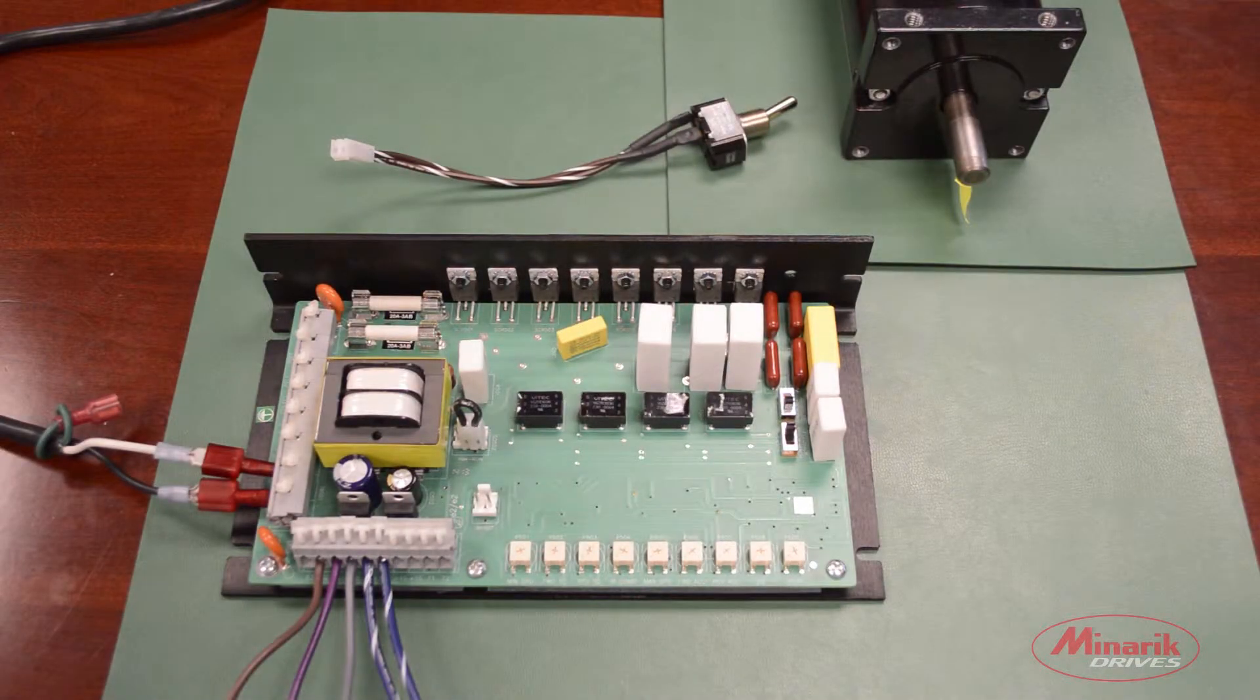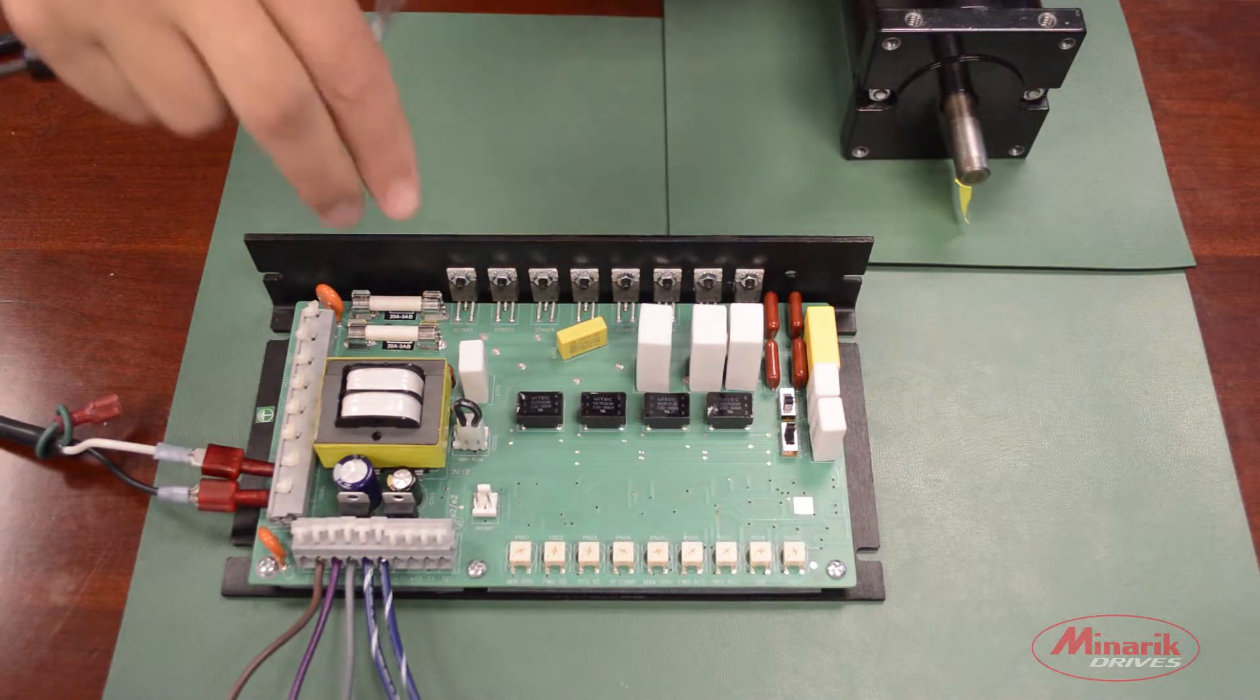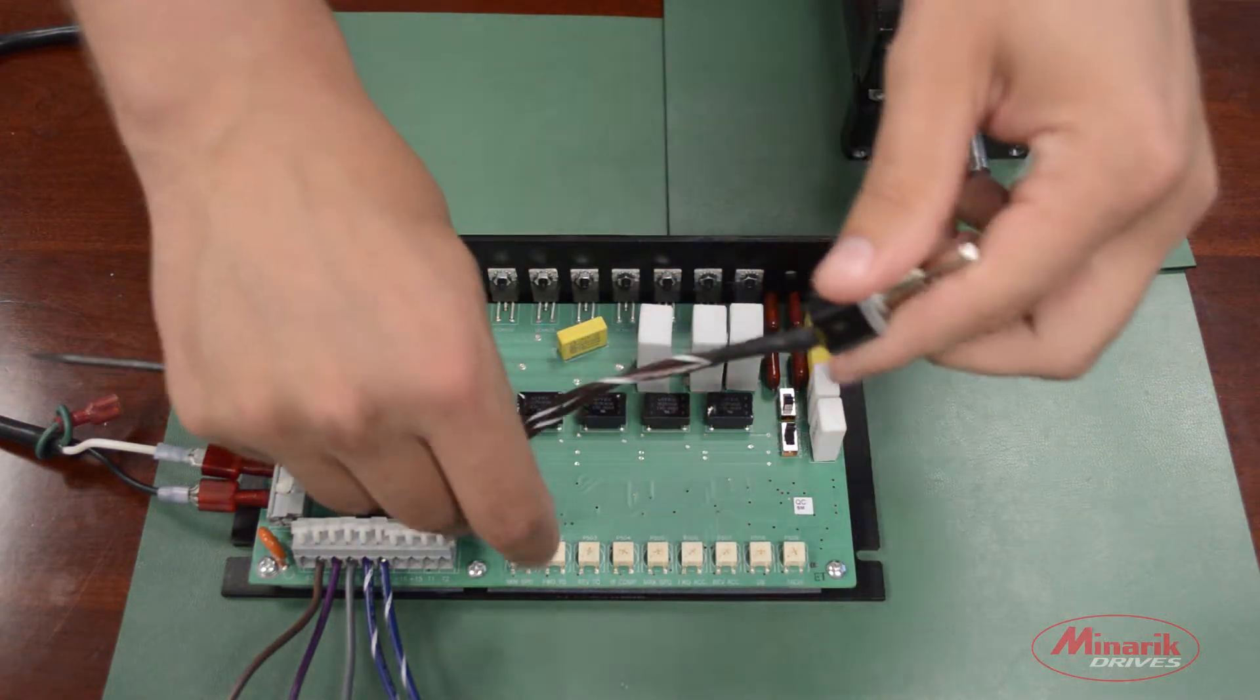Next we'll wire up an inhibit switch. This connection will be to the header block labeled inhibit in the middle of the drive.